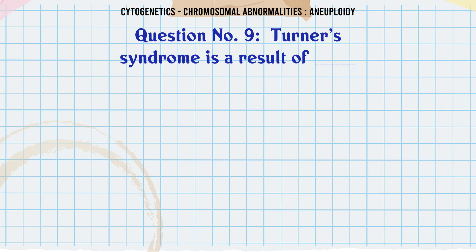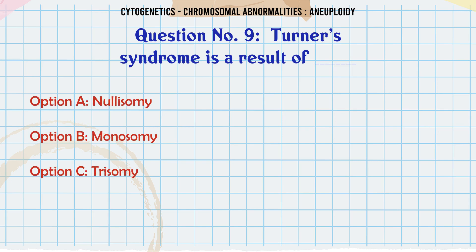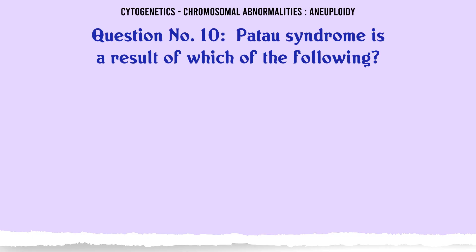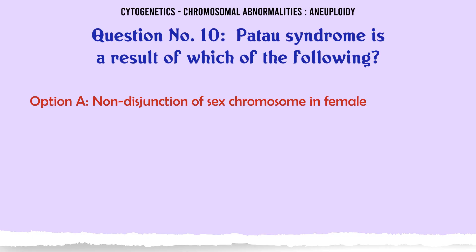Turner syndrome is a result of: a. Nullisomy, b. Monosomy, c. Trisomy, d. Polysomy. The correct answer is Monosomy.